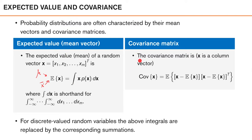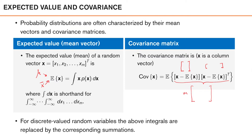The covariance of x, or the second central moment of p of x, is defined as the expectation of x minus its mean times the same thing transposed. We can view this factor as the distance between x and its mean — that is, how much does x spread around its mean value? We assume that x is a column vector throughout the whole course, so this product is an outer product: a tall matrix times a wide matrix. This product is an m by m square matrix, which is symmetric and positive semi-definite.